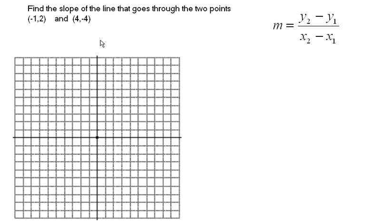Find the slope of the line that goes through the two points negative 1 and 2, and 4 and negative 4. We're given two points, and we know that a line will go through these two points — two points will create a line — and we want to find the slope of that line.